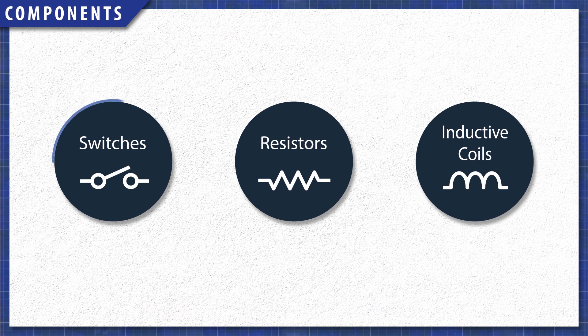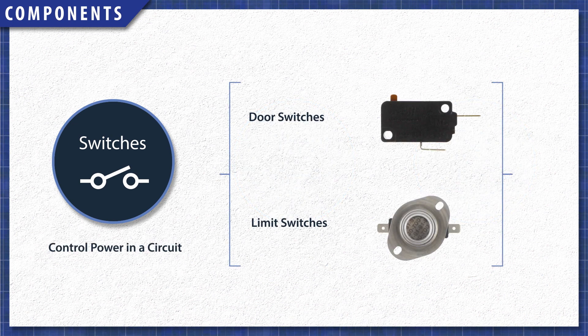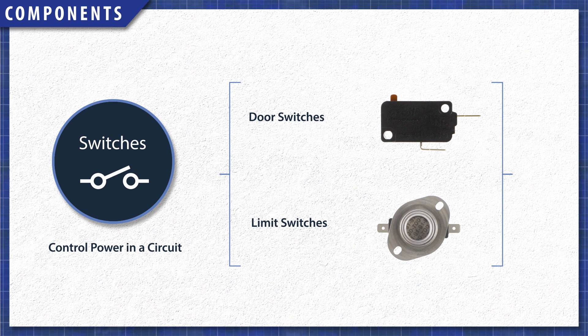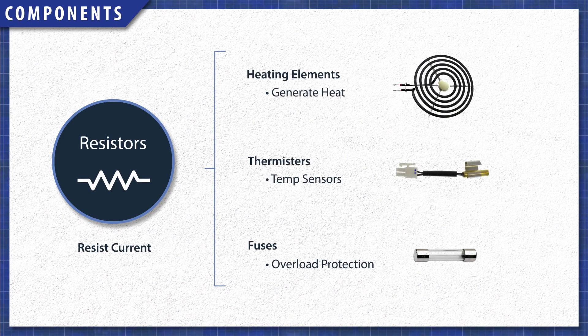Most components in an appliance will either be a switch, resistor, or an inductive coil. Switches simply connect or disconnect power in a circuit. This includes door switches and limit switches. Resistors restrict the flow of electricity, and generate heat when the current or resistance is high enough. Heating elements in ovens and dryers harness this heat in a controlled way.